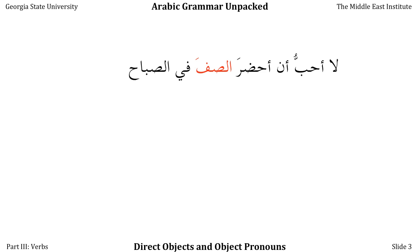When we're given an example like this — لا أحب أن أحضر الصف في الصباح, 'I don't want to go to class in the morning' — the word الصف is what we call the direct object of the verb أحضر. That is, it is the person or object that receives the action of the verb. The class is what is being attended, so it's the direct object.